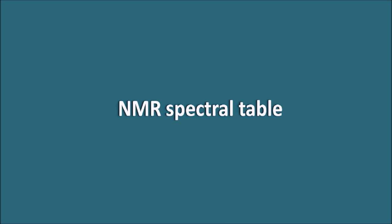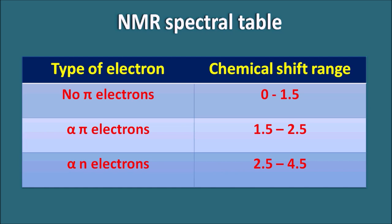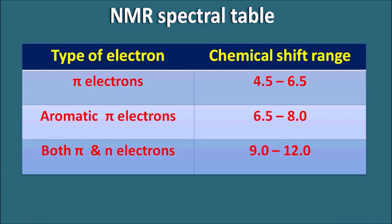In the NMR spectral table, protons with no adjacent pi electrons show a chemical shift of 0 to 1.5 ppm. Protons with adjacent pi electrons appear at 1.5 to 2.5 ppm, and those with adjacent lone pair electrons (N electrons) at 2.5 to 4.5 ppm. Protons directly attached to pi electrons fall at 4.5 to 6.5 ppm, aromatic protons at 6.5 to 8.0 ppm, and protons having both adjacent pi and N electrons at 9 to 12 ppm.